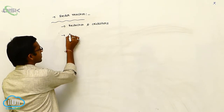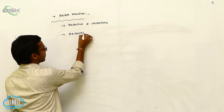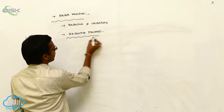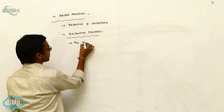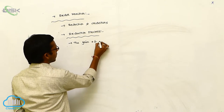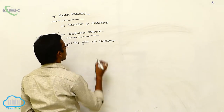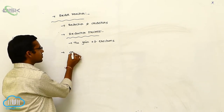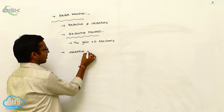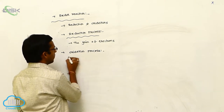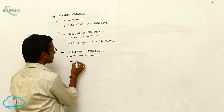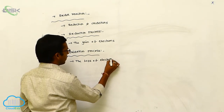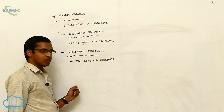In redox reactions, first we discuss the reduction process. The gain of electrons is called as reduction. Next, the oxidation process means the loss of electrons is called as oxidation process.